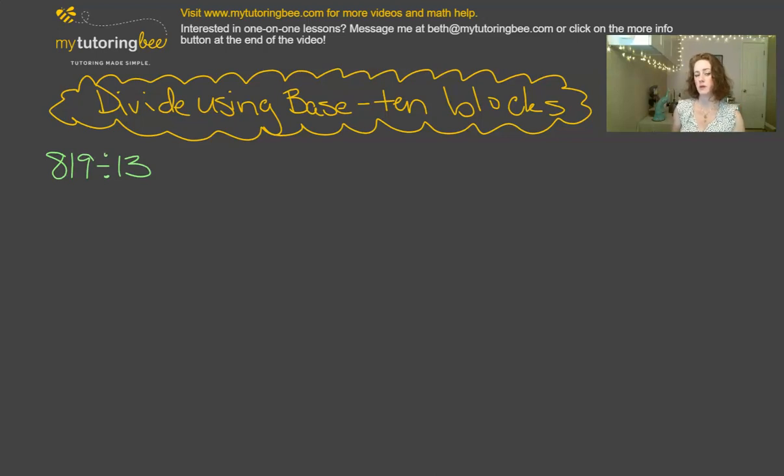So we're going to start with 819 divided by 13. First, before we even get into the base-10 blocks, let's rewrite this division problem in a slightly different way. Instead of 819 divided by 13, I want to think of this as a multiplication problem. Division is just the opposite of multiplication, right? So I want to think of this as 13 times what number equals 819. I want you to keep that in mind while we're working through this method, and that will help make this method make a lot more sense.